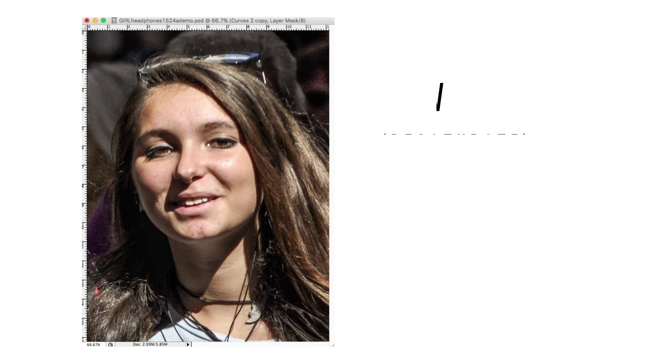There are two main steps. First, because the values of a picture — that is the pattern of light and dark shapes — are the most important elements, we want to discard the color information. Most software will call this adjustment black and white, or desaturation.